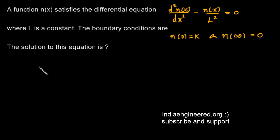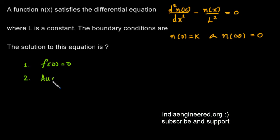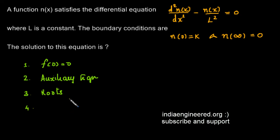We know the procedure to solve this kind of problem. First, we write the equation in symbolic form, that is f(D) = 0. Second, we write the auxiliary equation and find its roots. From the type of roots obtained, we write the complementary function. As the last step, we apply the boundary conditions.